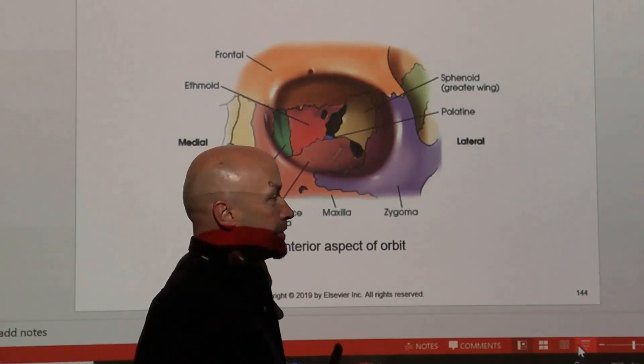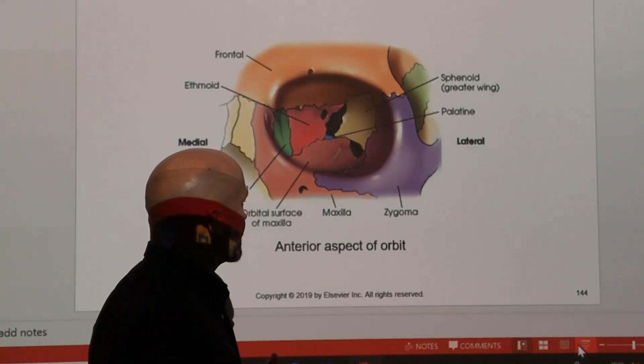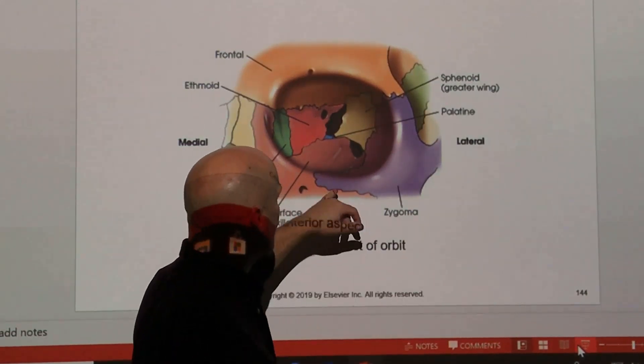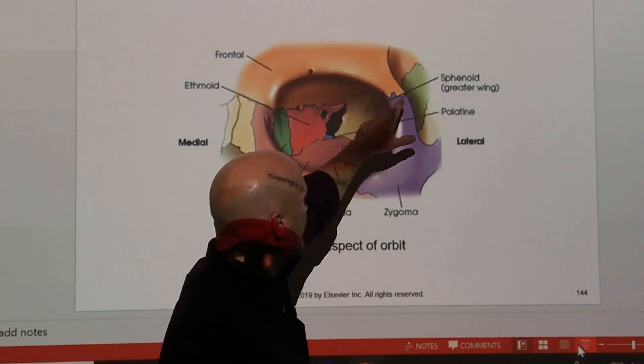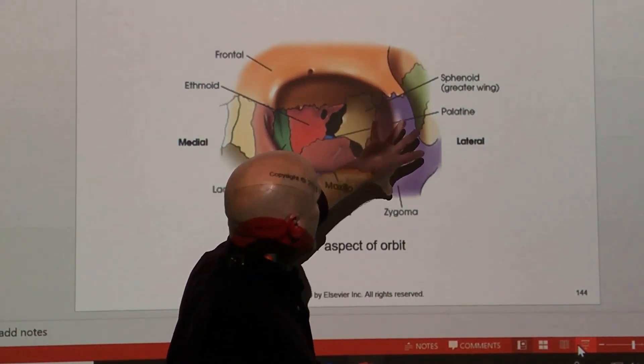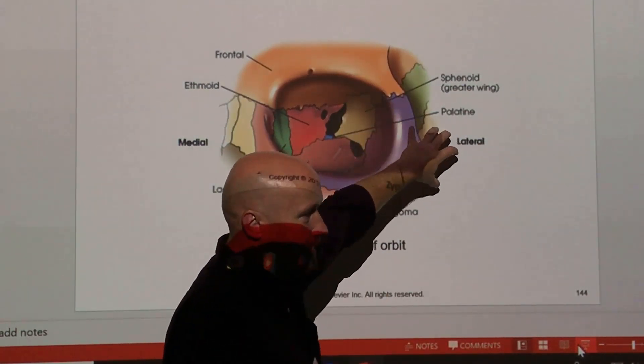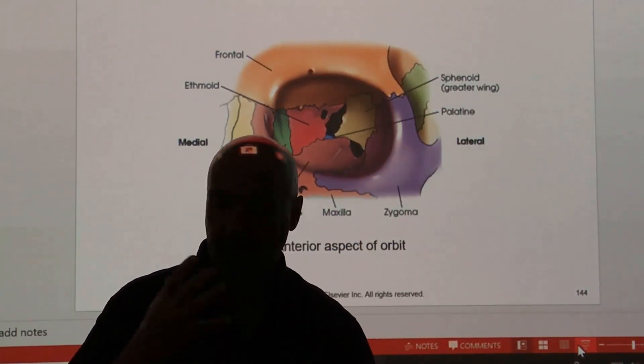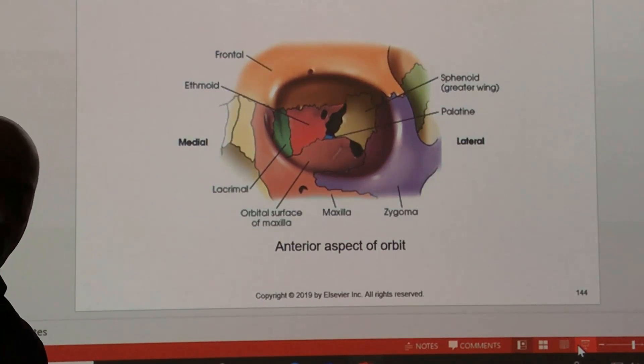The other fracture is what we call a tripod fracture. That's whenever somebody gets hit really hard in the cheekbone itself and the cheekbone disarticulates with the frontal bone and the maxilla. So this bone here is basically free-floating, and that's a tripod fracture. Two most common fractures of the orbit itself.